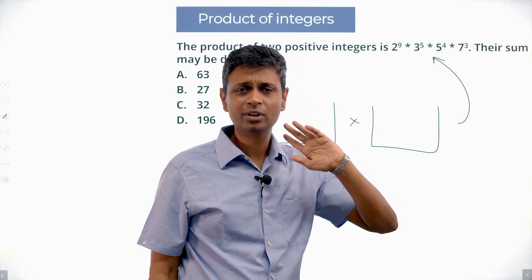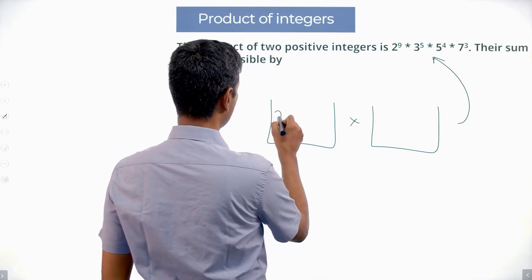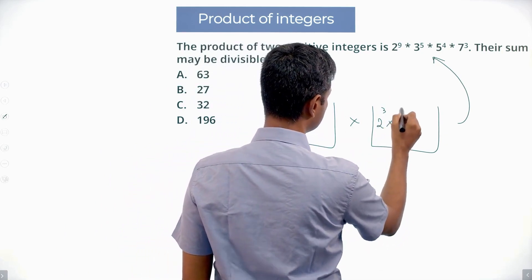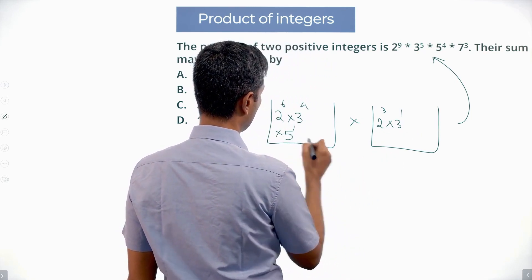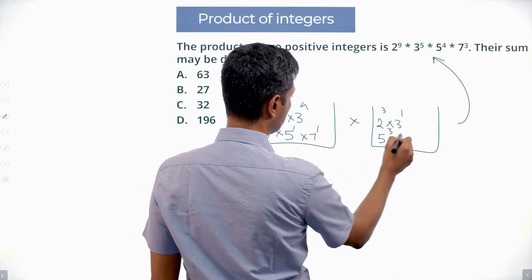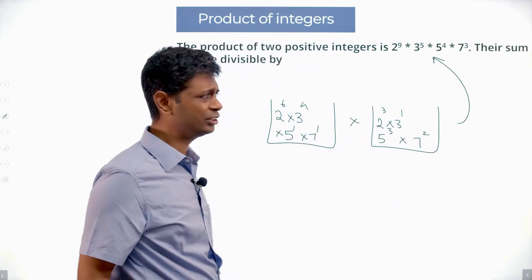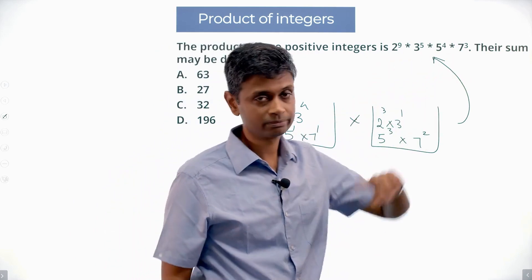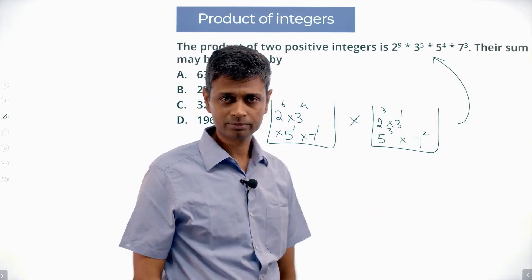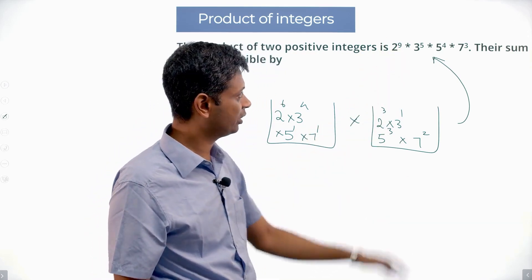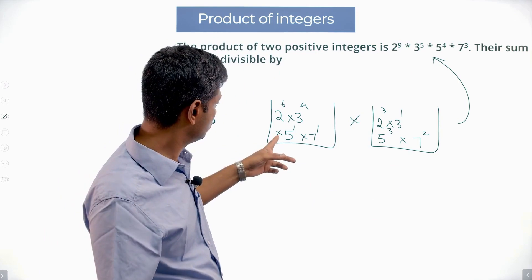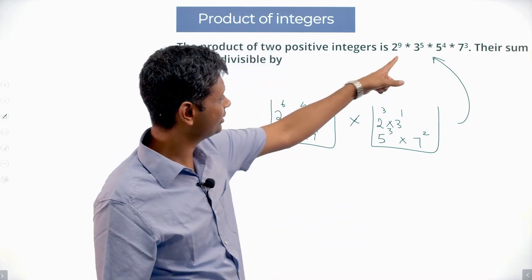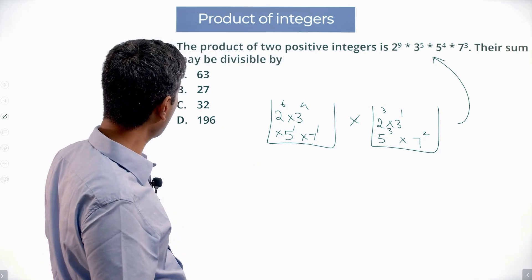For example, one number could have six 2s and the other three 2s; one could have four 3s and the other one 3; one could have 5¹ and the other 5³; one could have 7¹ and the other 7². That's one possibility — together they multiply to give the original number: nine 2s (six plus three), five 3s (four plus one), four 5s (one plus three), three 7s (one plus two).